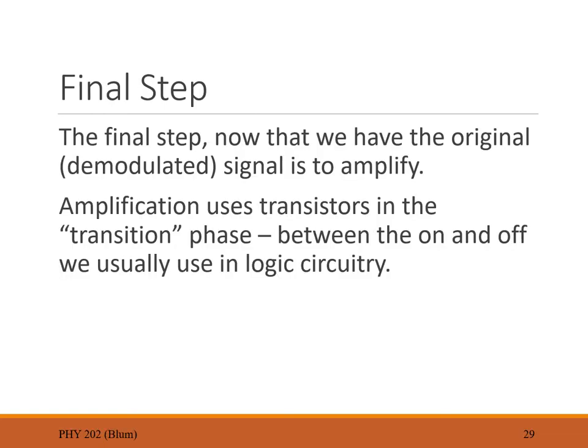One final step: the signal radiated in all directions from the antenna, so what we detect is a small signal. To use it, we need to amplify it. A transistor can be used as an amplifying circuit. While transistors are often used in on/off fashion, the transition region between on and off is exactly the part of the transistor's behavior used for amplification.